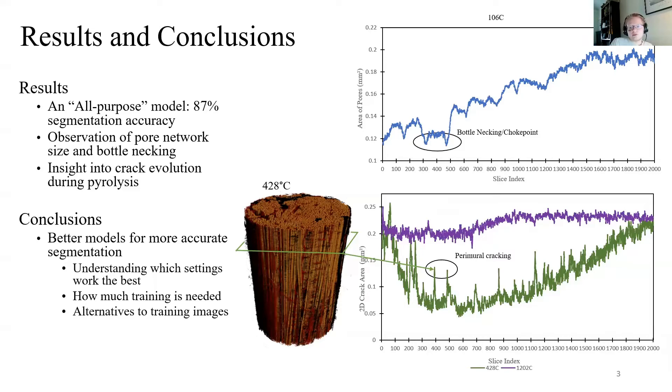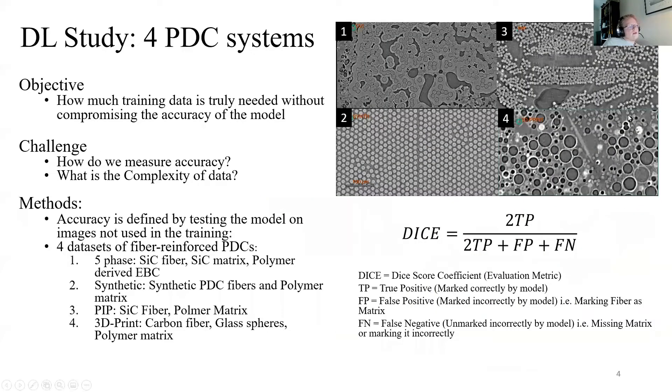In order for this to work, we had to find out what methodology created the best AI models. The major question we wanted to answer was how much training data is truly needed to produce an effective model. The less time that we spend segmenting images to achieve the same accuracy, the better.